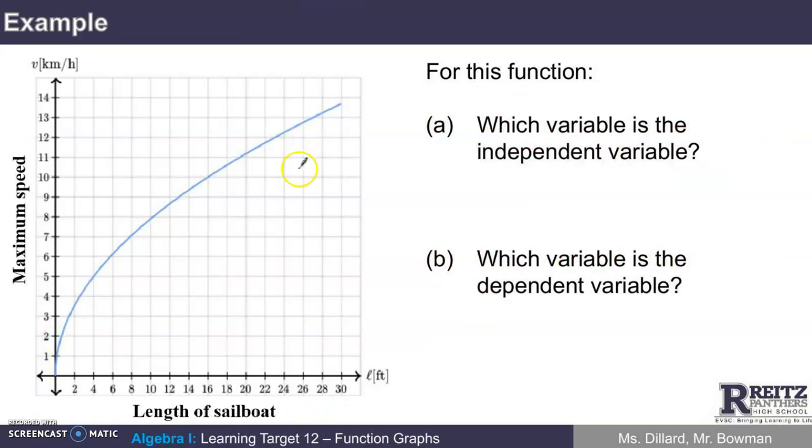So for this example, which one is the independent variable? Well, we just said the independent variable is the length of the sailboat. That's the one of the two quantities that, if we change it, will affect the other. We don't have control over the maximum speed of the boat. We have control over the length of the sailboat. So which is the dependent variable? Well, it's the maximum speed.